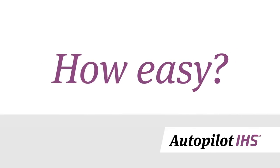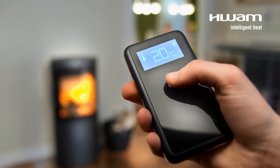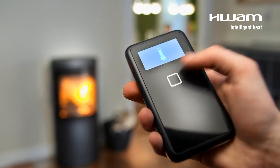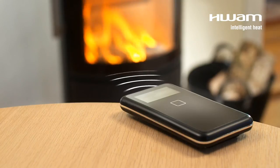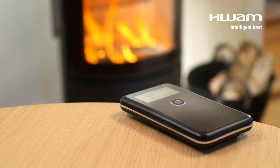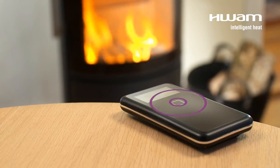All you have to do is light the stove in the usual way and set the room temperature to the level you wish with the remote control. Autopilot IHS then does the rest and even beeps when you need to add more firewood.